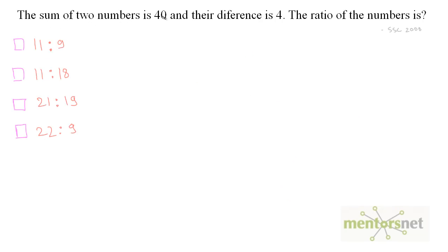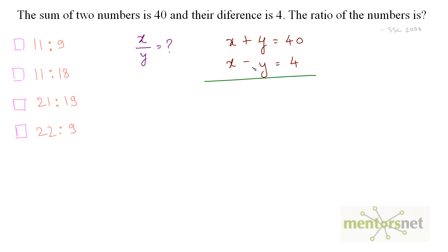The sum of two numbers is 40 and the difference is 4. What is the ratio of these numbers? We have been asked x by y. Given: x plus y equals 40 and x minus y equals 4. You can add these two equations to get rid of y. Adding them: 2x equals 40 plus 4, which is 44, so x equals 22.